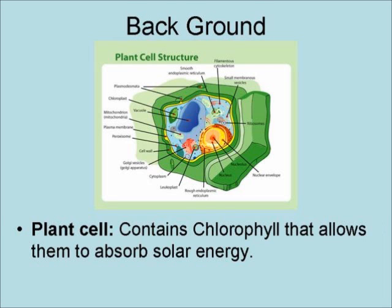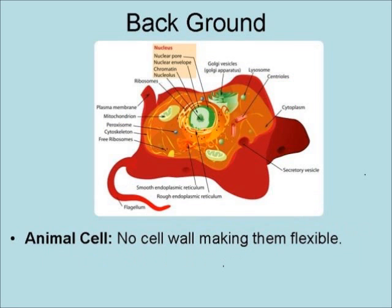Plant cells contain chlorophyll that allows them to absorb solar energy. Animal cells have no cell wall, making them flexible. They are found in animals and people.